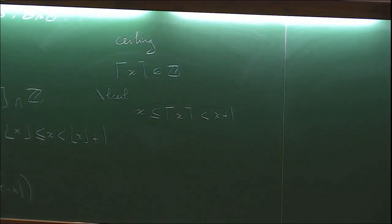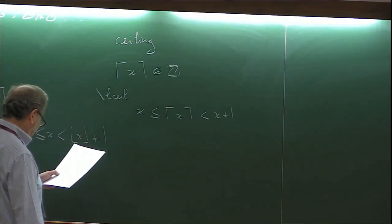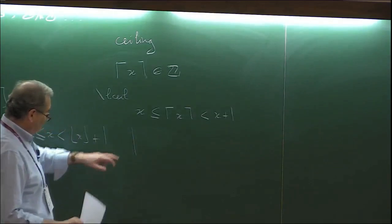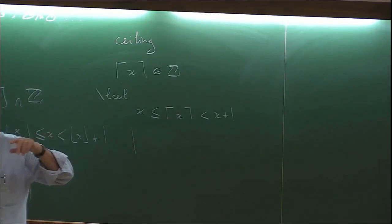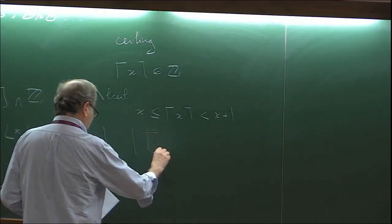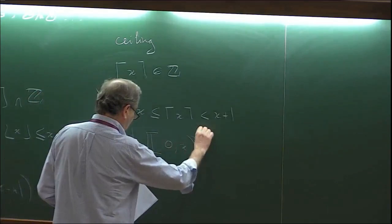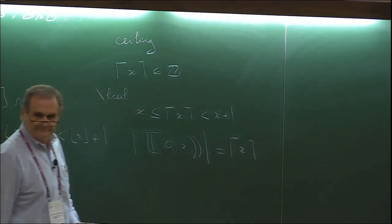What is of interest for us: the cardinality of the set of integers between 0 and X (X excluded) is the ceiling of X. This is why we need that. With this notation established, we can start our business.